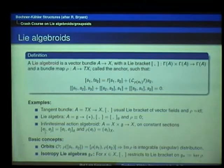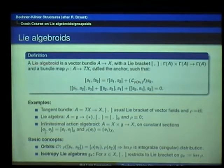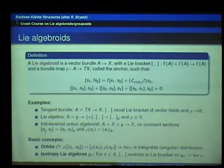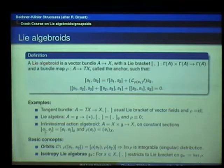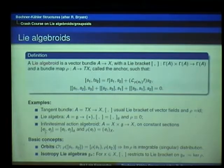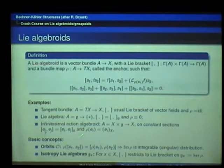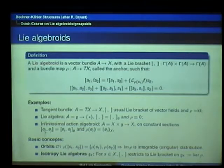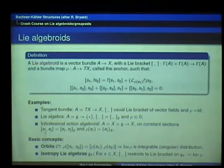Lie algebroids come with two things: orbits and isotropy. The orbits come from looking at the image of the anchor map — it gives a distribution in X of varying rank, but still integrable, so it has leaves called the orbits of A. The isotropy: the kernel of the anchor at a point becomes a Lie algebra because of the Leibniz property. So at each point you have a different Lie algebra, called the isotropy Lie algebra. For the infinitesimal action algebroid, the orbits are nothing but the orbits of the action, and the isotropies are the isotropies of the action. In the tangent bundle case there is only one orbit, with trivial isotropy. In the case of a Lie algebra, there is only one orbit — the point itself — and the isotropy is just the Lie algebra G.